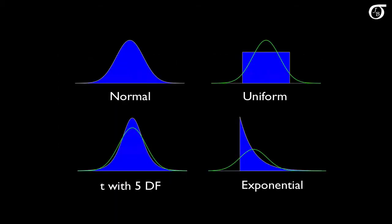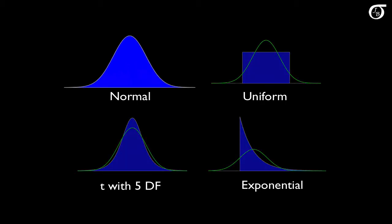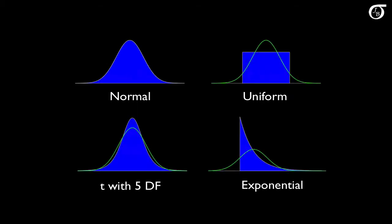To illustrate that, I'm going to run simulations where we are sampling from four different distributions, given in blue. In the first case we'll be sampling from the normal distribution, so the normality assumption will be true in reality. In the other three cases we'll be dealing with different violations of the normality assumption.